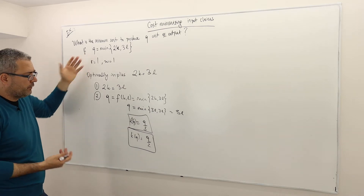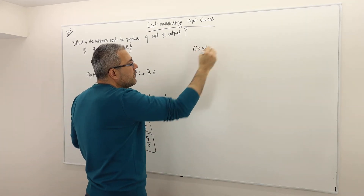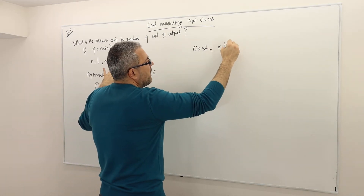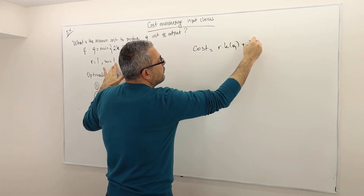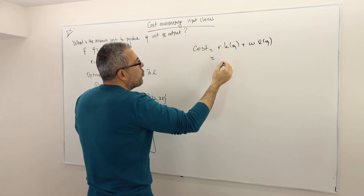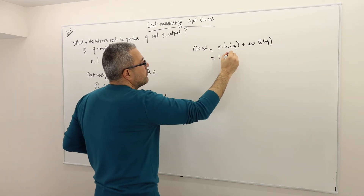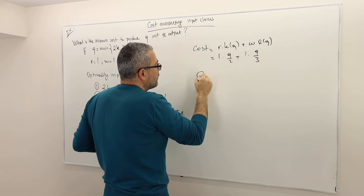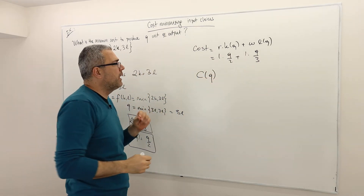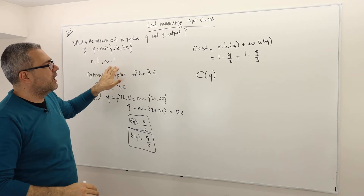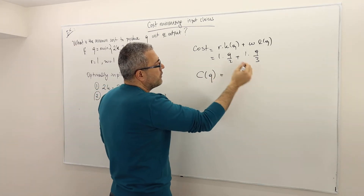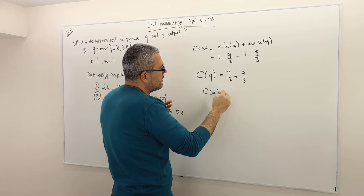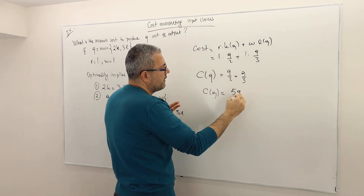What is the minimum cost to produce Q units of output? The cost — ignoring fixed costs — is R times K(Q) plus W times L(Q). R is 1, so it's 1 times Q over 2, plus W which is also 1 times Q over 3. Therefore, the cost function C(Q) equals Q divided by 2 plus Q divided by 3, or simply 5Q divided by 6.